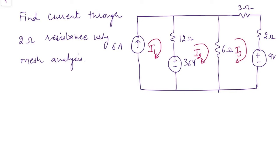After assigning currents, we observe that in the first mesh the branch current is i1, which equals the 6-ampere current source directly. So i1 equals 6 amperes. This is the special case in mesh analysis: when a current source is in the outer branch, we can obtain that mesh current directly, without applying KVL.